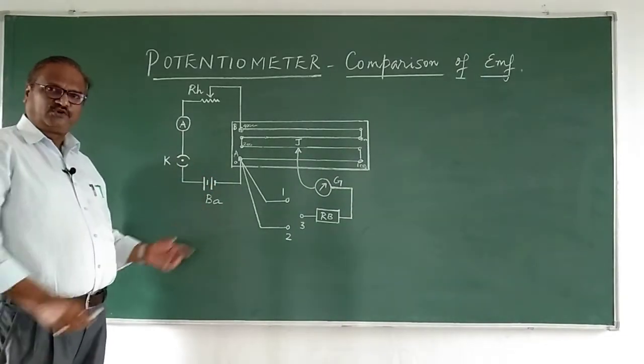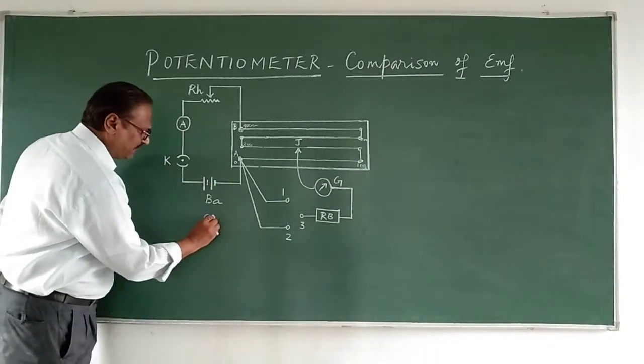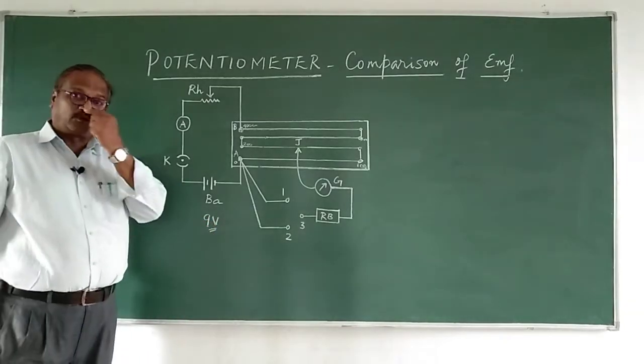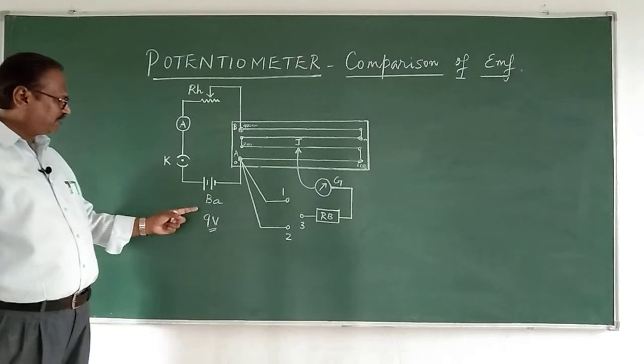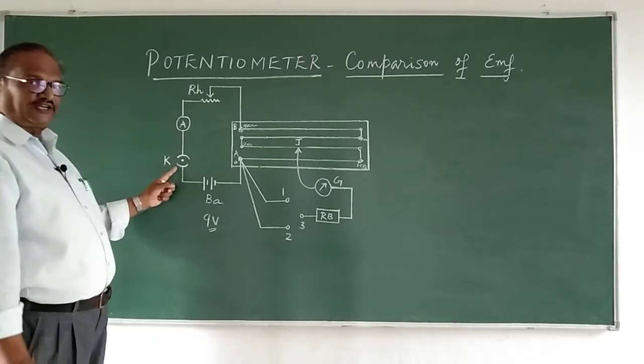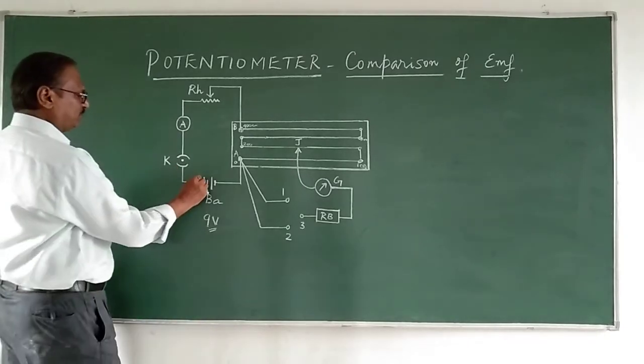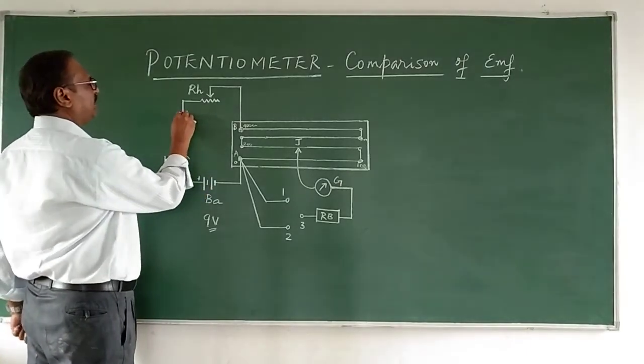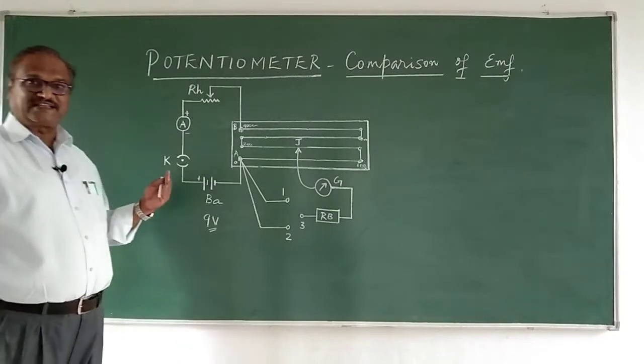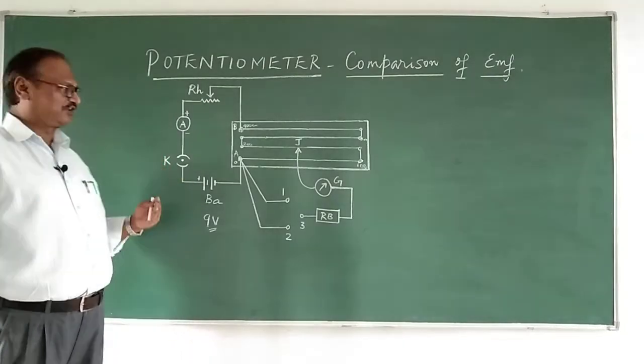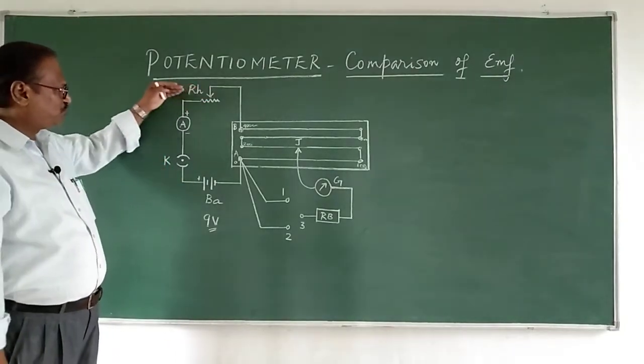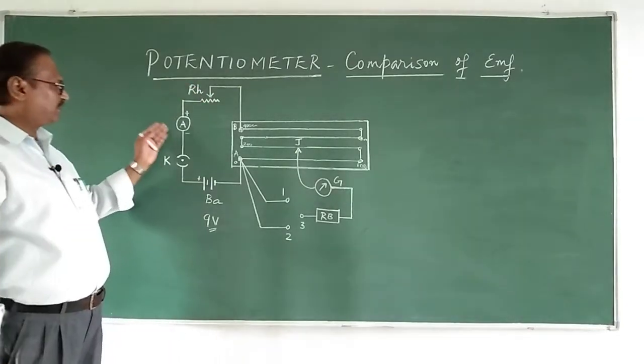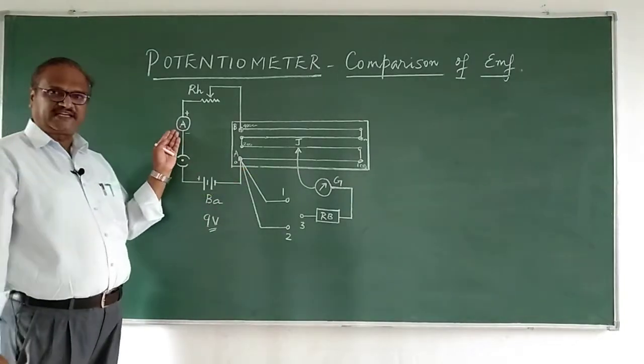The primary circuit consists of a battery, usually close to 9 volts for proper functioning. A minimum of 9 volt battery is connected here, and from positive I have connected to a key, positive to negative of an ammeter, then positive to a rheostat. A rheostat is a variable resistor so I can adjust this jockey here.